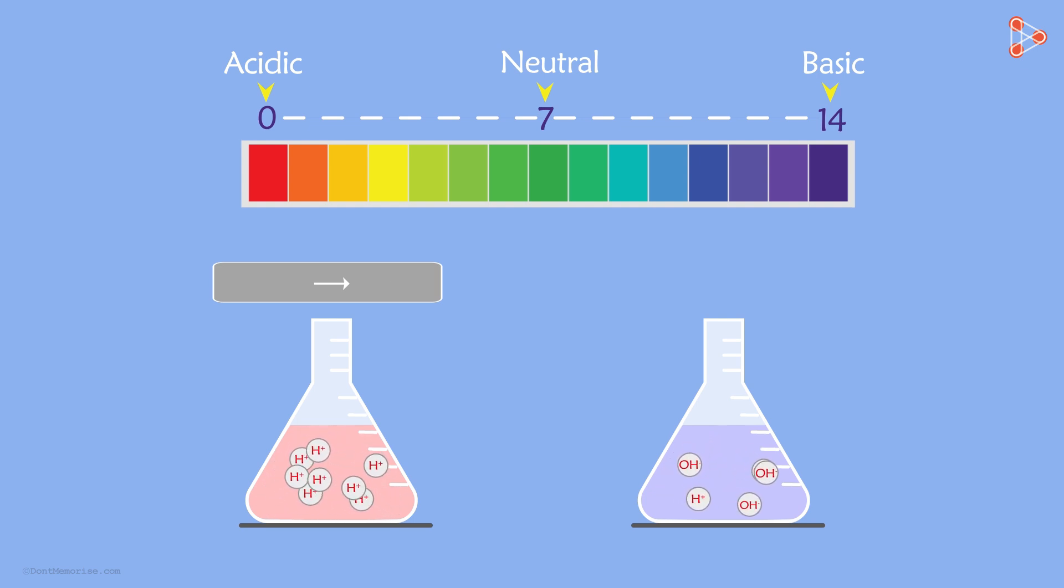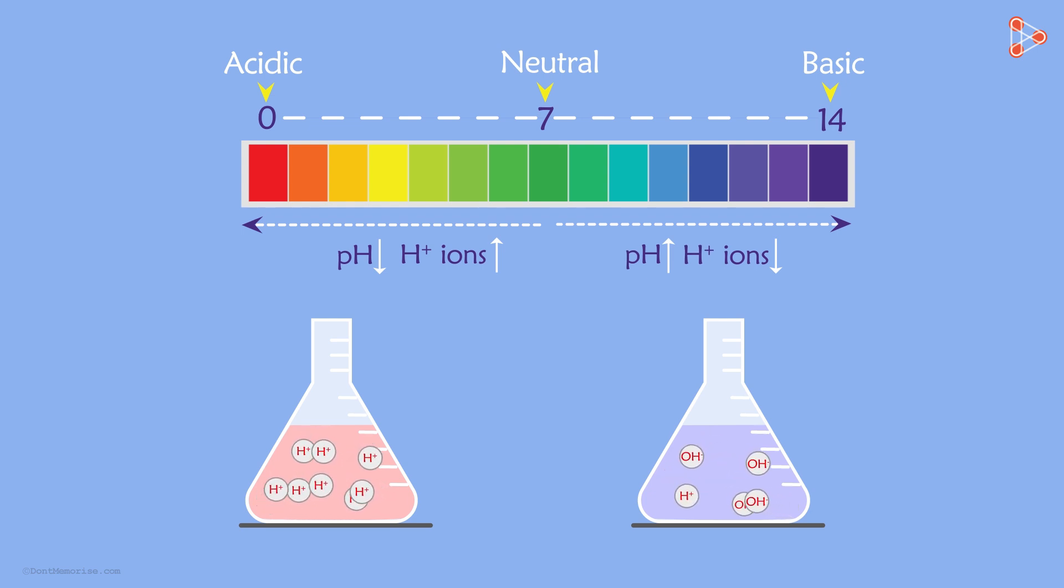Now if you look at the scale, as we go towards the left, the pH value is decreasing. Which means that if we go leftwards on this scale, the H plus ion concentration increases. And as we go rightwards, the H plus ion concentration reduces. And we know that higher H plus ion concentration implies that the solution is more acidic. So the acidic nature increases as we go towards the left.